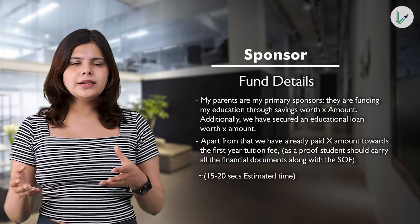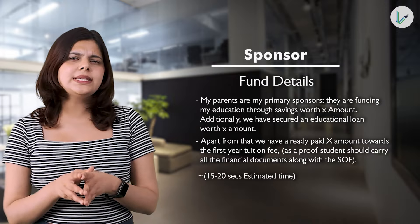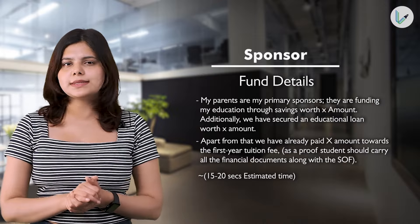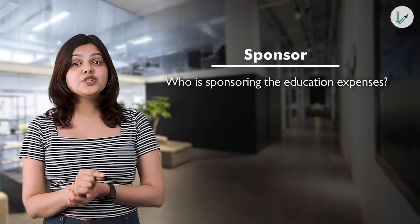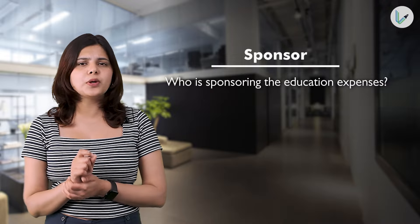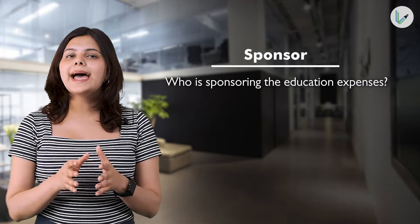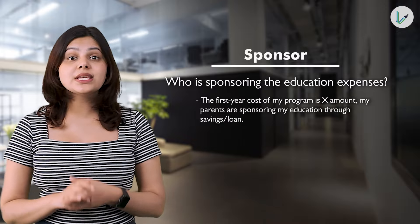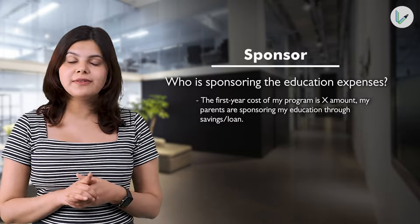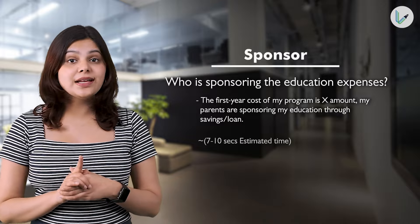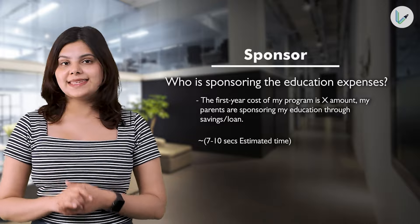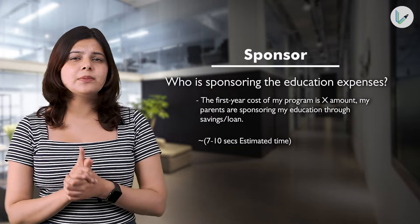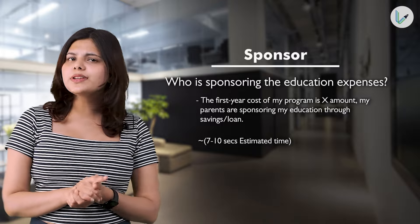Always mention the correct source of funds — whether it's a loan or sponsored by parents or relatives. A vague or incorrect answer would be: 'My family has some money saved and I plan to take up a job on campus to cover some of my expenses.' For the question of who is sponsoring education expenses, the ideal answer is: 'The first year cost of my program is X amount. My parents are sponsoring my education through savings or a loan.' This should be answered in 7 to 10 seconds.